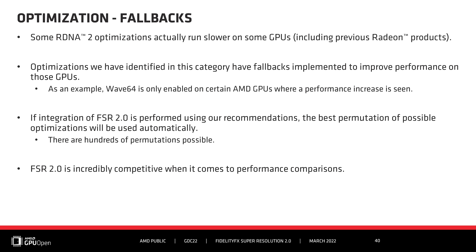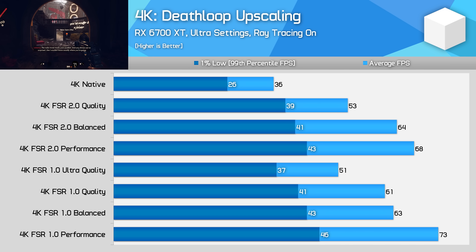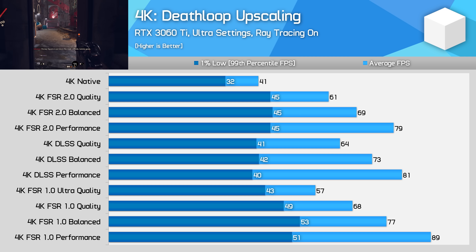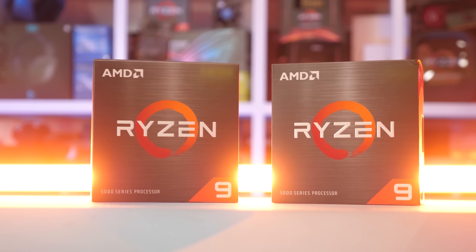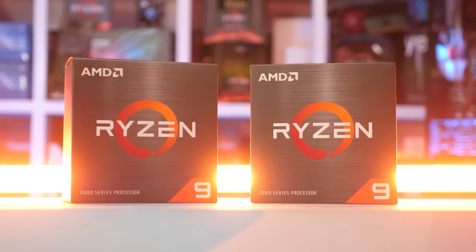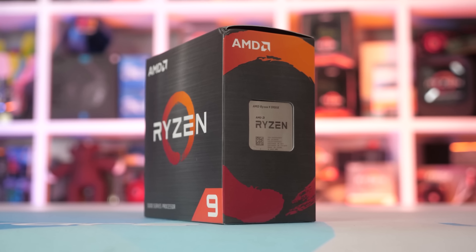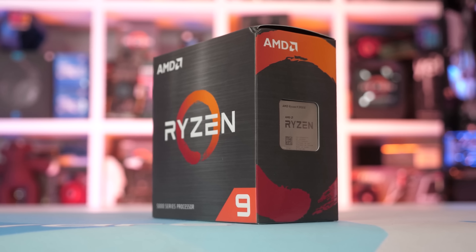AMD's GDC presentation seemed to indicate the algorithm has been designed with the RDNA2 architecture in mind, but there are various fallback options for other GPUs that don't support the full feature set of the latest architectures, and we should learn more when the source code is released. We already know that performance on the RDNA2-based RX 6700 XT is roughly the same as on NVIDIA's Ampere RTX 3060 Ti. For today's testing, I'm using my Ryzen 9 5950X test system, equipped with 16GB of low-latency DDR4 memory, running the latest publicly available drivers for AMD and NVIDIA.